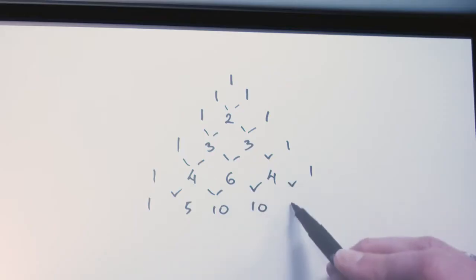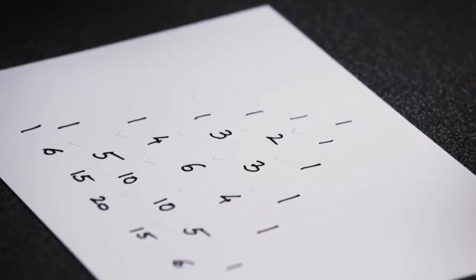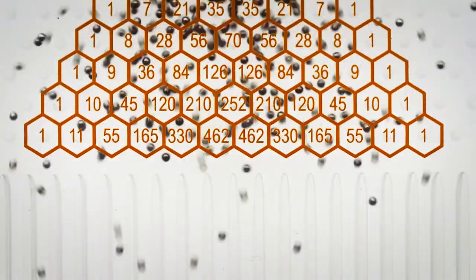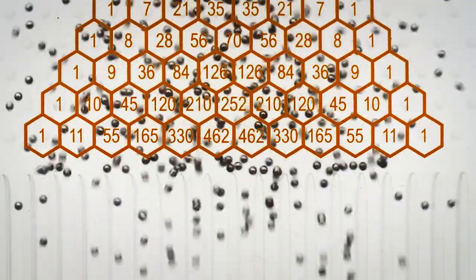And it's the exact same pattern of numbers that we get when counting the pathways a bead can take as it descends the Galton board. That's because the bead's journey is a binomial process and the numbers in Pascal's triangle correspond to the coefficients of a binomial expansion.